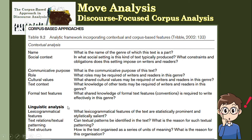When dealing with corpus-based features, you need to address the following linguistic aspects: lexicogrammatical features, text relations or textual patterns, and text structures. For lexicogrammatical features, you answer: what lexicogrammatical features of the text are statistically prominent and stylistically salient? For text relations or textual patterning: can textual patterns be identified in the text, and what is the reason for such textual patterning? For text structures, you answer: how is the text organized as a series of units of meaning, and what is the reason for this organization?